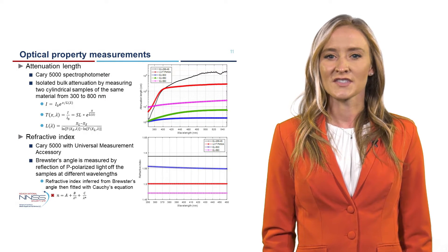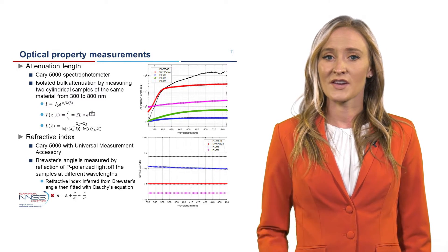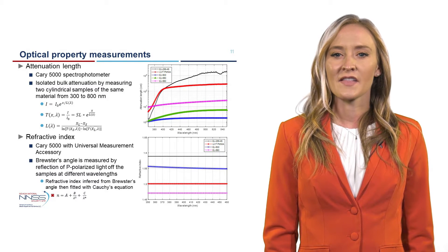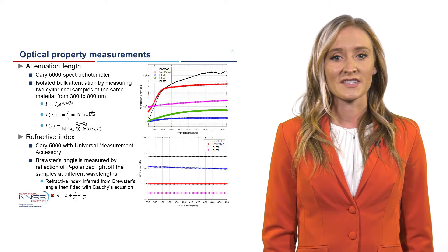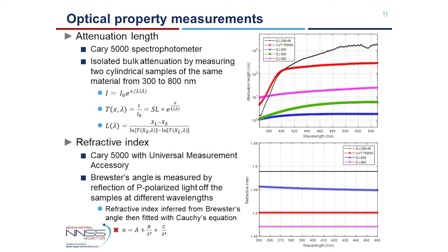The light transmission through samples of the EJ-299-49 scintillator, UVT PMMA, EJ-500 optical cement, EJ-550 optical grease, and EJ-560 optical pads were measured as a function of wavelength using a Cary 5000 spectrophotometer. Two different cylindrical samples of the same material were used — one one centimeter thick and the other 10 centimeters thick — and the difference in light transmission yields the attenuation length of the material. The index of refraction of each sample was obtained from the Brewster angles and then fitted with the Cauchy equation.